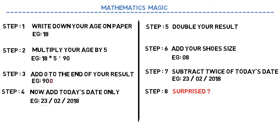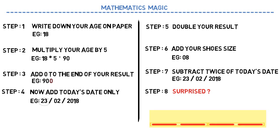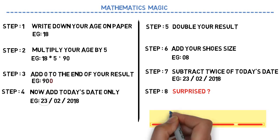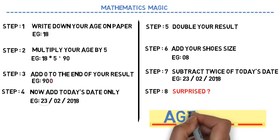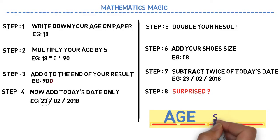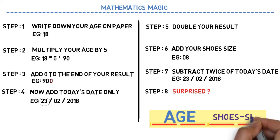Now surprised? The first two digits of your answer show your age, right? And the next two digits are your shoe size. So this is what we call our Mathematics Magic, which relates to the concept of variables. We'll come to know more about this once we start our session on variables.